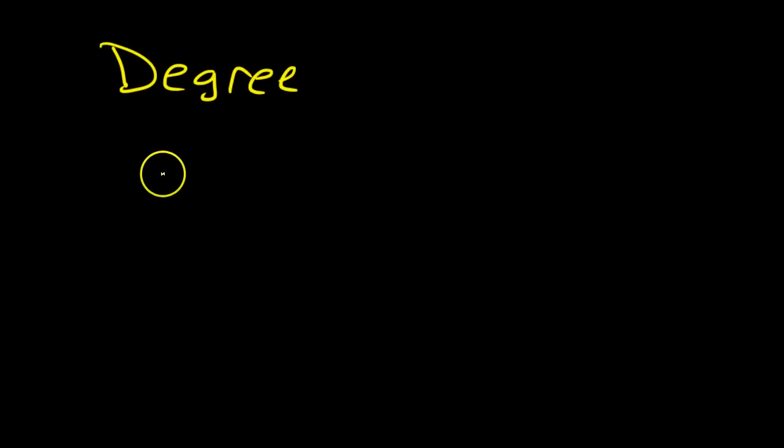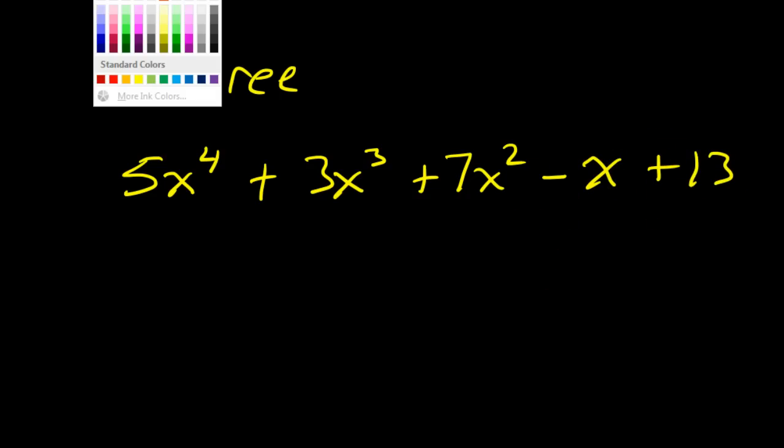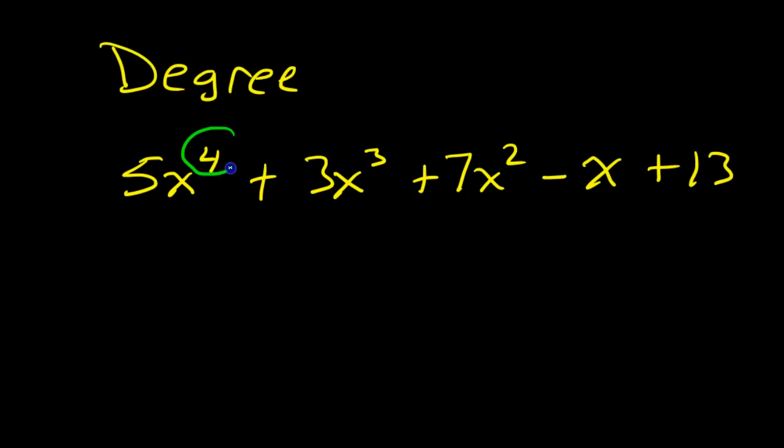The degree of a polynomial is the highest power of any term. For example, if I have a polynomial that goes 5x to the 4th power plus 3x to the 3rd power plus 7x squared minus x plus 13, the degree is 4 because it's the highest power. It doesn't matter the order.